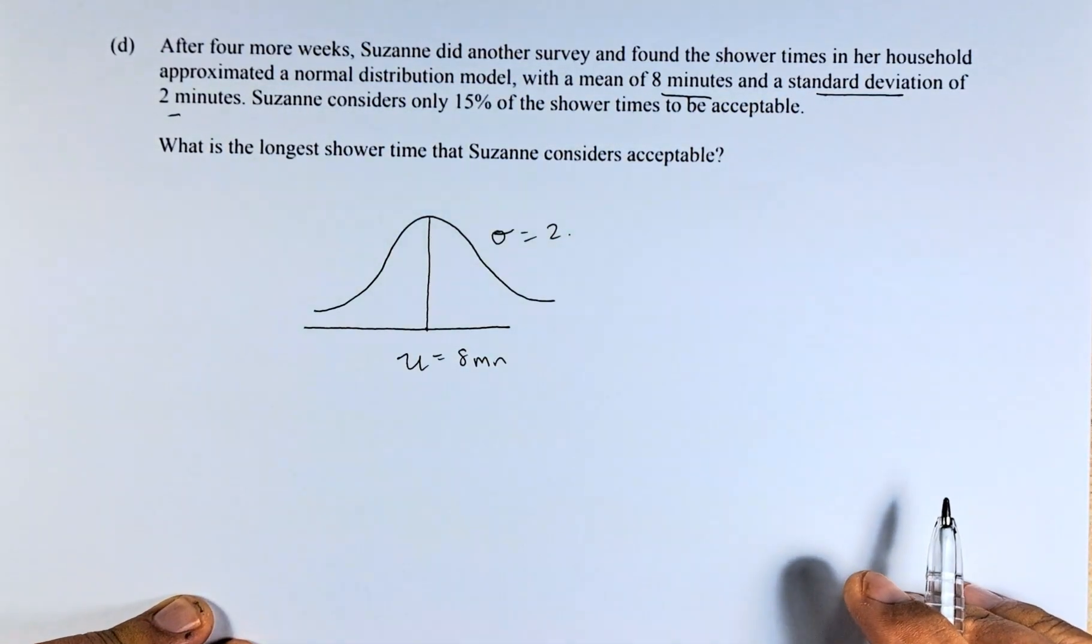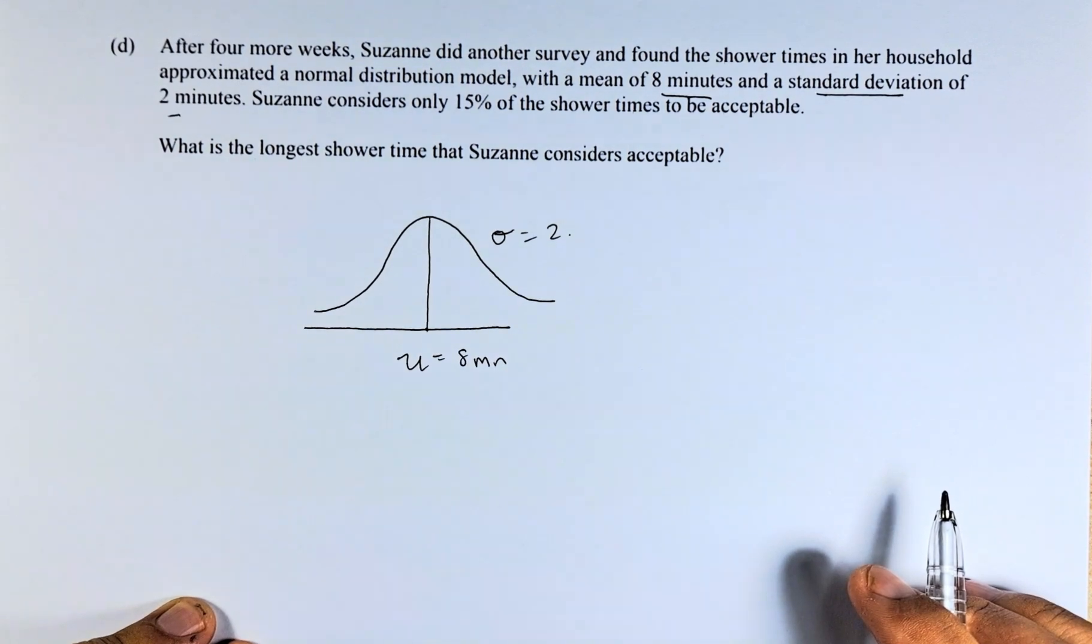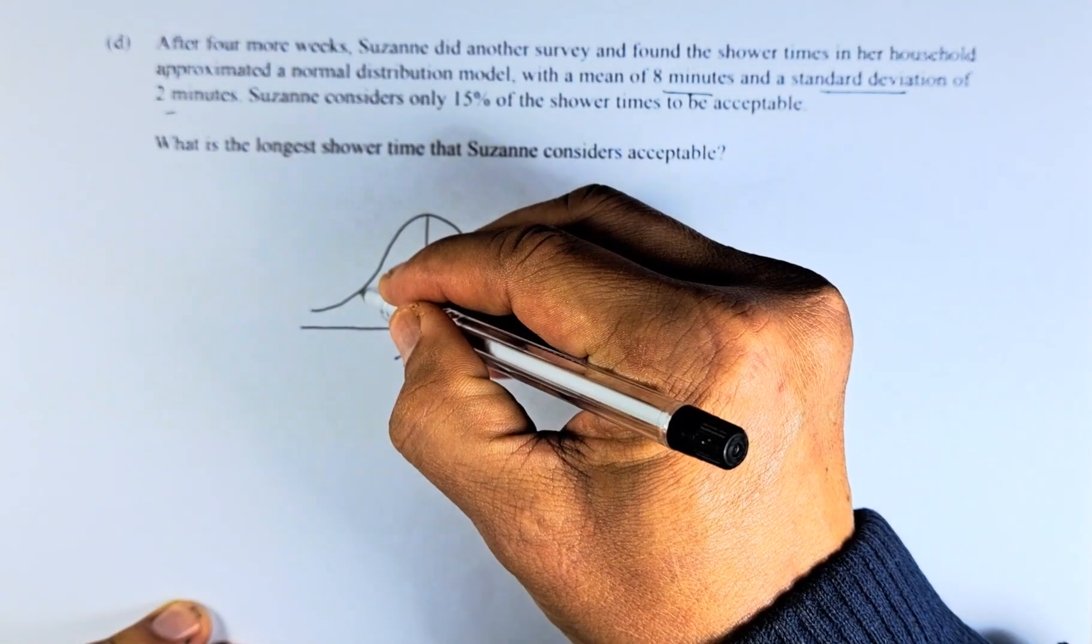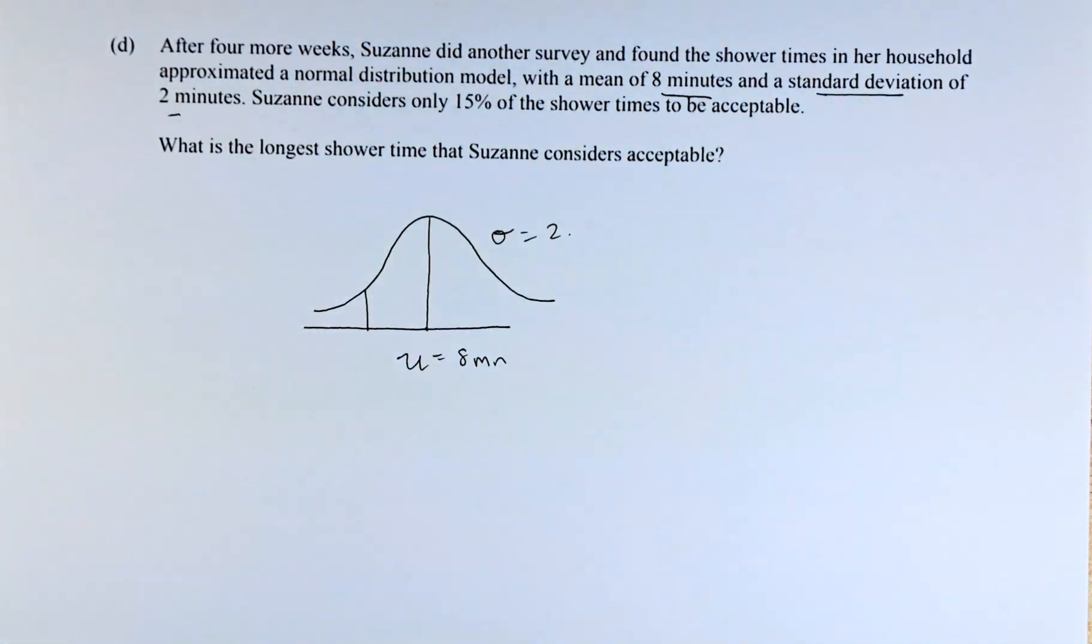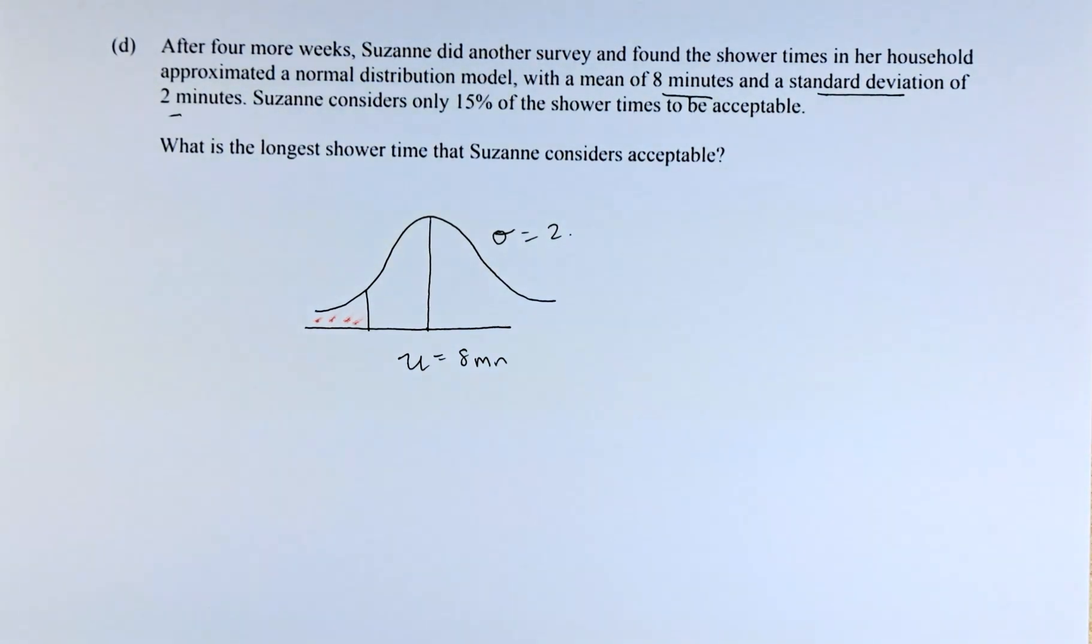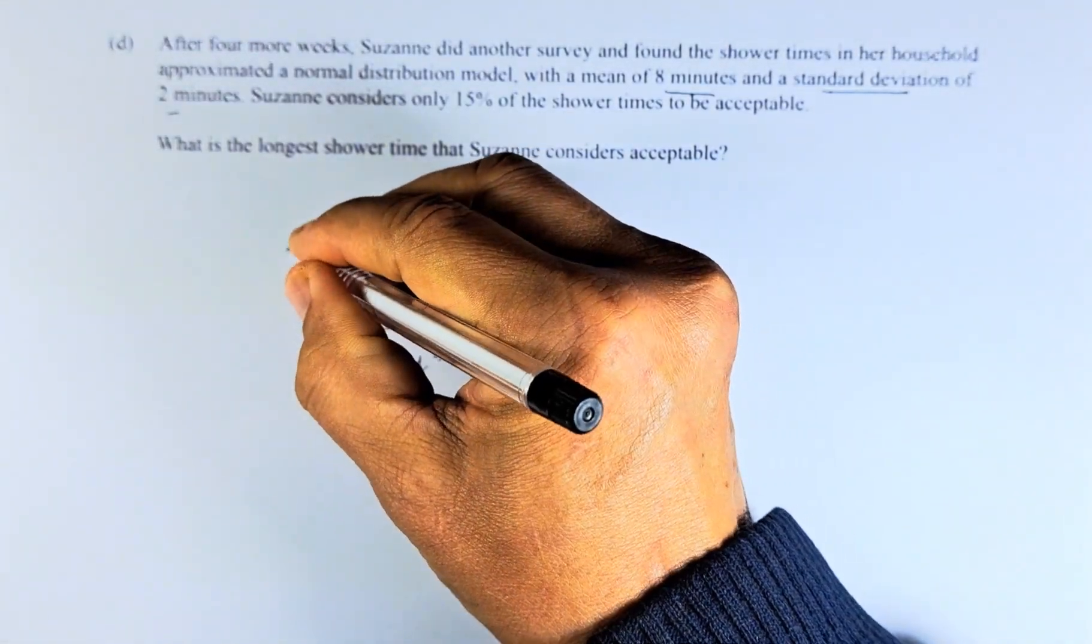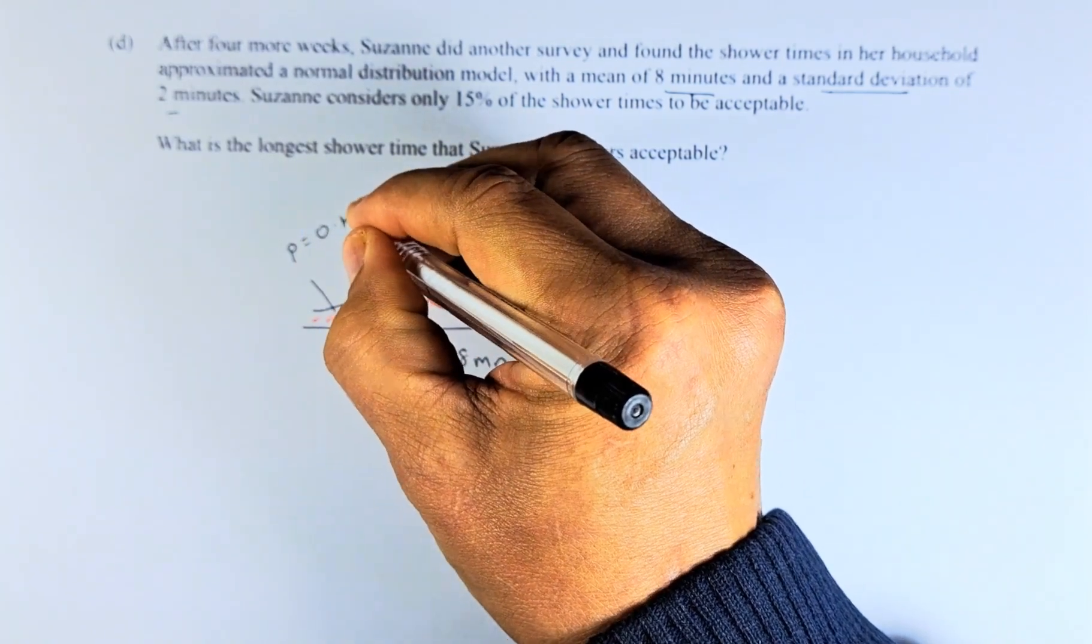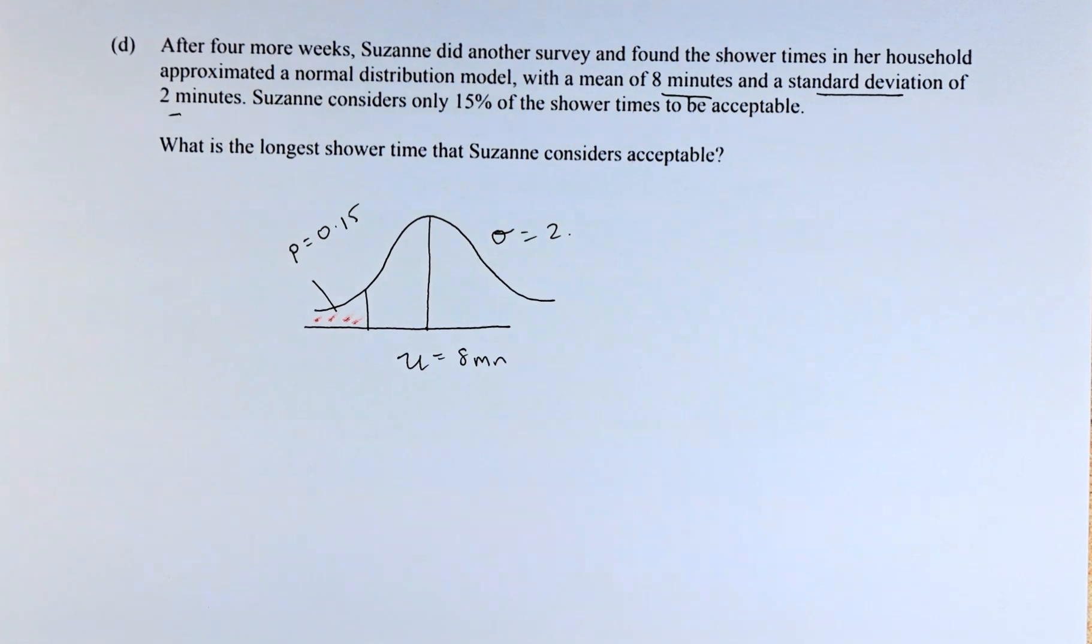Then the last part: Susan considers only 15% of the shower time to be acceptable. So 15% the area, we are going to color this here. That area has to be 15%, so we are going to put the area or the probability equal to 0.15. 15% is 0.15 or 15 over 100.